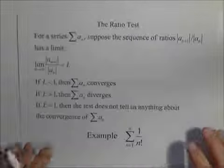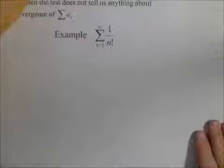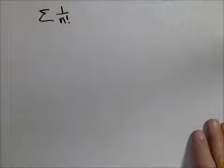We're going to take a look at an example on how we draw our conclusion. So we're going to do the series one over n factorial. Seeing a factorial or an exponential are two good keys that you'll want to use the ratio test.